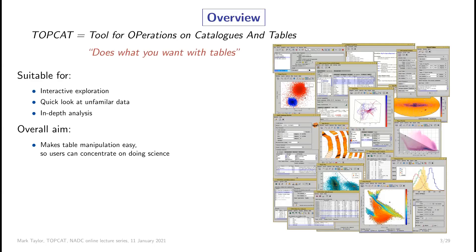TOPCAT is a desktop application for working with tabular data — that usually means source catalogues, but it can be other kinds of tables as well. It's good for both looking at a table you haven't seen before and getting a rough idea of what data is in there, what columns there are, and making small plots, but also for doing really in-depth analysis to extract all the astronomically interesting information. Its basic job is to do all the boring mechanical things — understanding external file formats, visualization, cross-matching, moving columns around and doing calculations — so that you, the astronomer, can concentrate on doing the actual astronomy.